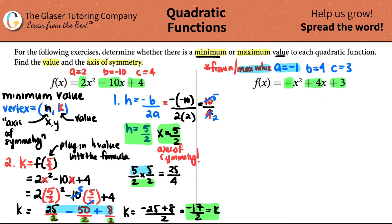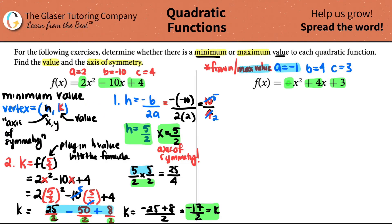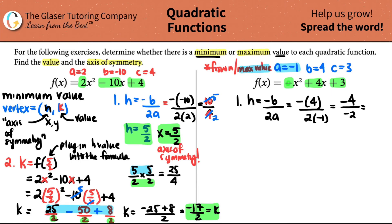We know that we have a frown and a max value. We need to find that number — it comes from the vertex. The vertex is X comma Y, H comma K. Axis of symmetry is the H value; the actual value is the K. H is always equal to negative B over 2A. Plugging in: negative 4 — that's our B value — divided by 2 times negative 1. So negative 4 divided by negative 2 gives H equals 2. When we state the axis of symmetry, we say X equals 2.